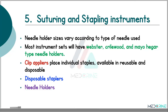The fifth classification is suturing and stapling instruments. Needle holders and sutures fall into this class. Needle holder sizes vary according to the type of needle the holder is used with. Most instrument sets will have the common types of needle holders known as Webster, Crile-Wood and Mathieu needle holders. We also have clip appliers that place individual staples, which can be either reusable or disposable.